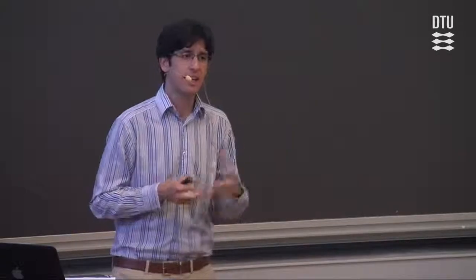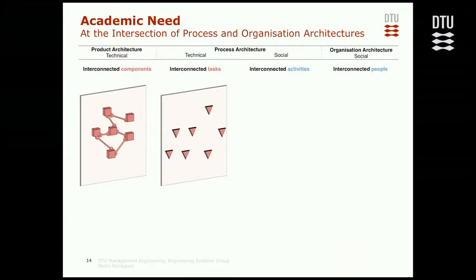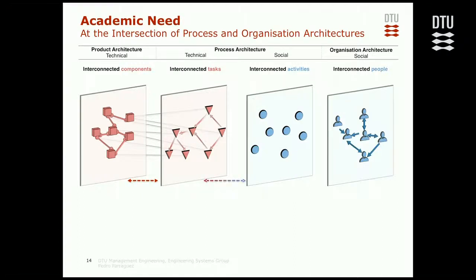As I also said, there are many interdependencies between these domains. To formalize them, I start with the product architecture — we can see interactions between components. We also have a set of tasks that allow us to define, evaluate, or manage the parameters of those components. A priori, we don't know the interdependencies between these tasks. But we can map each task and their parameters to particular components — once mapped, we can infer and explicitly calculate what the information dependencies on the task side are. There are already frameworks that work in this way.